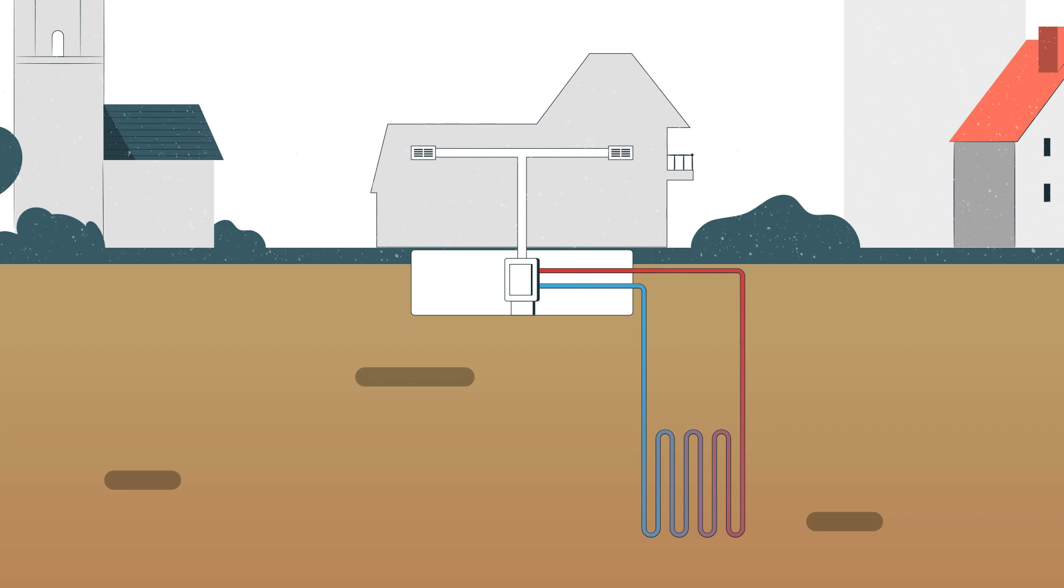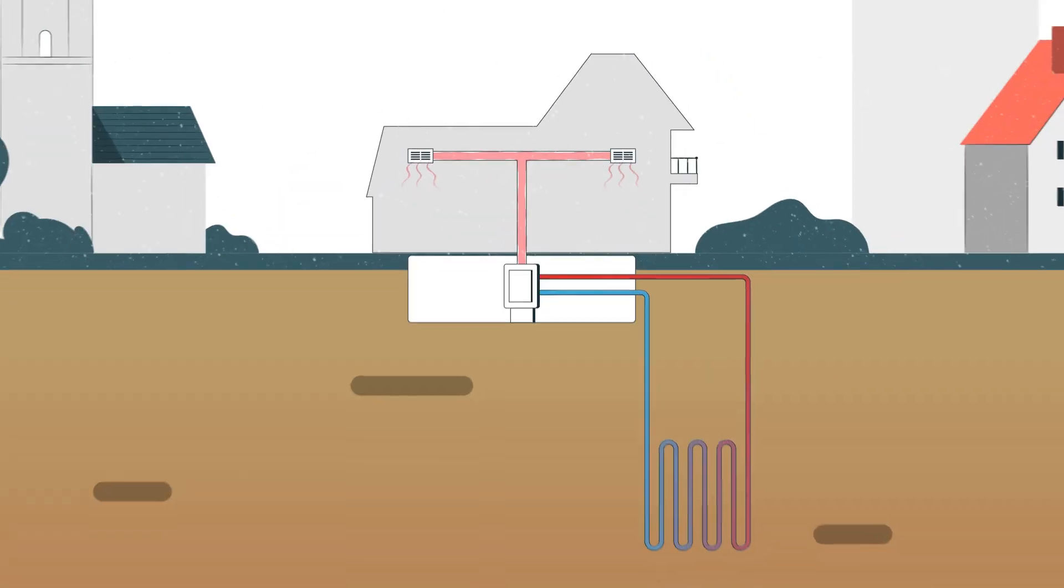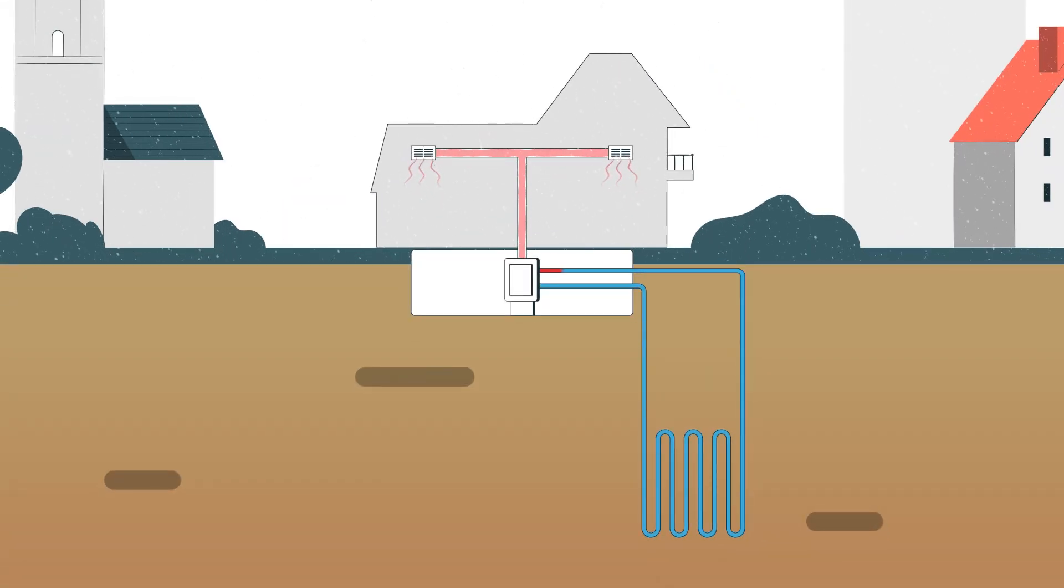When the weather is cold, the water or refrigerant heats as it travels through the part of the loop that's buried underground. Once it gets back above ground, the warmed water or refrigerant transfers heat into the building. The water or refrigerant cools down after its heat is transferred. It is pumped back underground where it heats up once more, starting the process again.